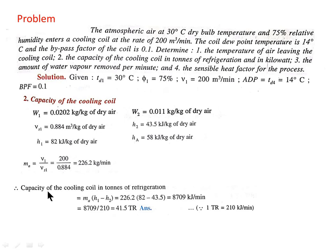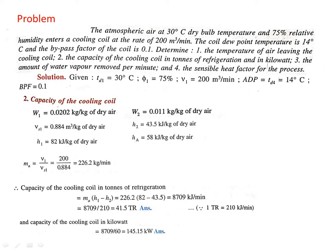The formula for capacity of the cooling coil in tons of refrigeration is MA × (H1 − H2). Putting MA = 226.2, H1 = 82 kJ/kg, and H2 = 43.5 kJ/kg, we get the capacity as 41.5 TR. Since 210 kJ/min = 1 TR, the capacity in kJ/min is 8709 kJ/min. Dividing by 60 gives the capacity in kW as 145.15 kW.